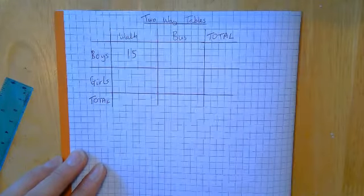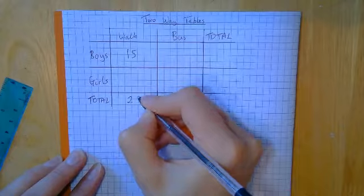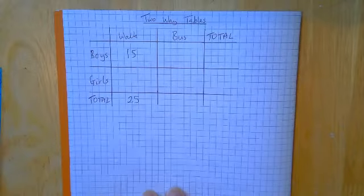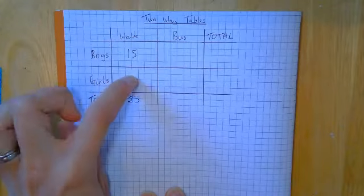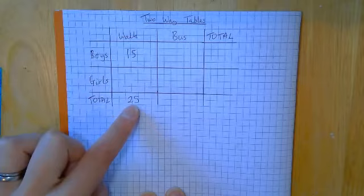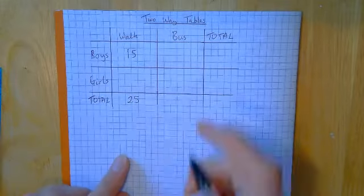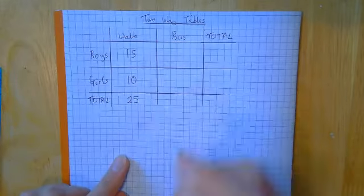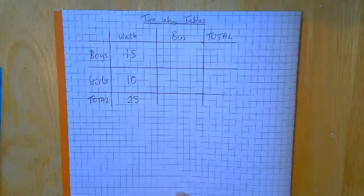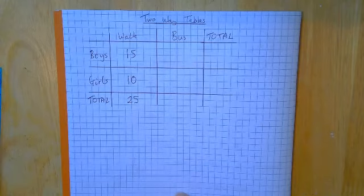So what did we say? We said that in total 25 people walked to school. Now with that information we can now fill in this box. We know that there were 25 people in total, 15 of them are here. So we've got 10 people here, 10 girls that walked.